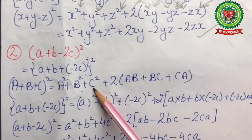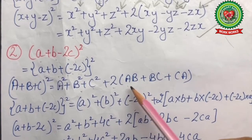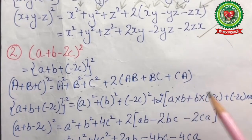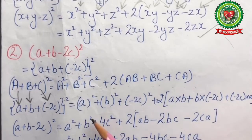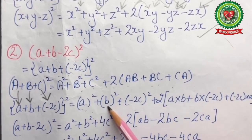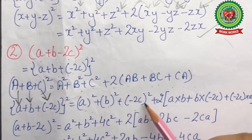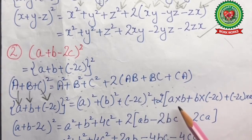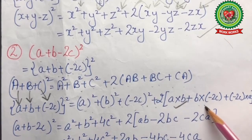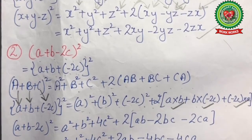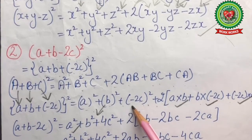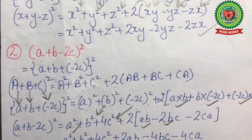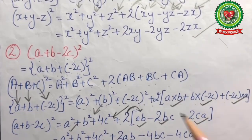On substituting a as a, b as b, and c as -2c, we get a²+b²+(-2c)²+2[a·b + b·(-2c) + (-2c)·a]. The square of -2c is 4c², so we get a²+b²+4c²+2(ab - 2bc - 2ca).